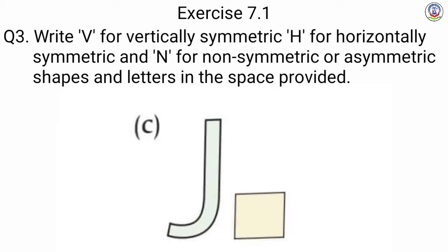We have alphabet J. J alphabet non-symmetric होता है या asymmetric होता है, so we write here N.